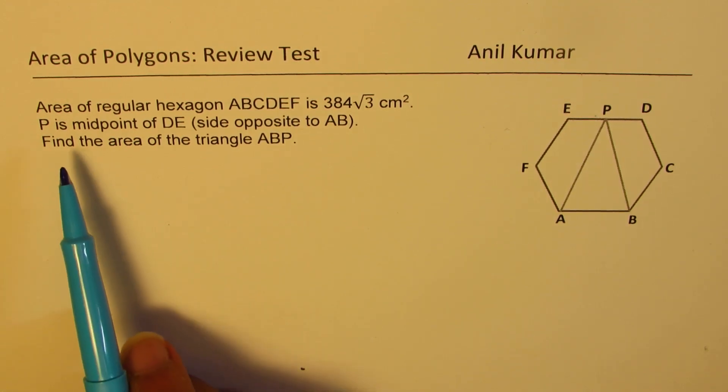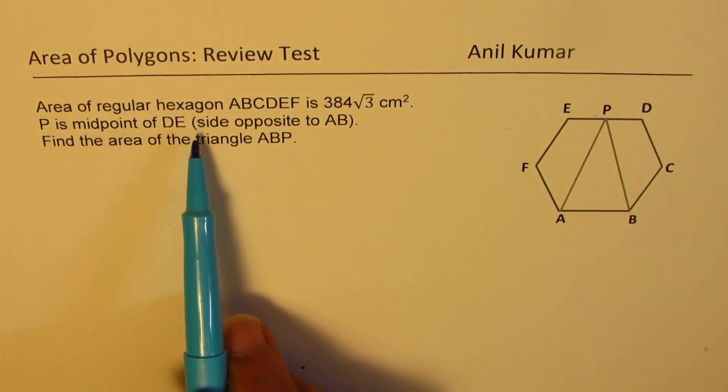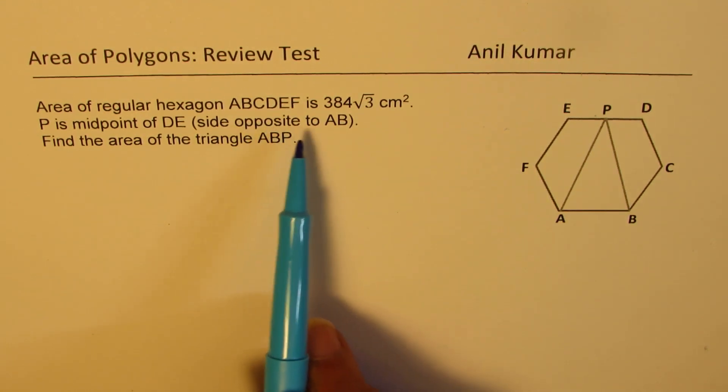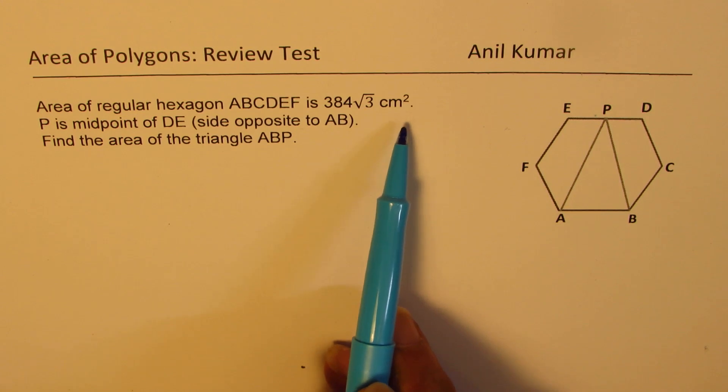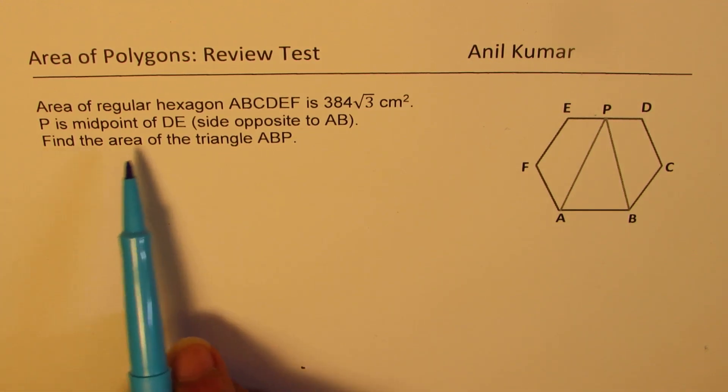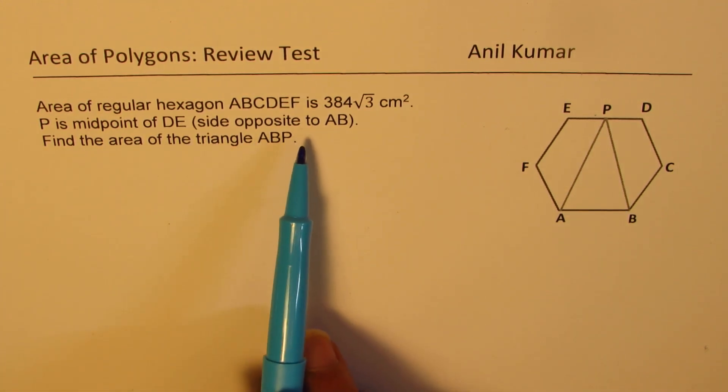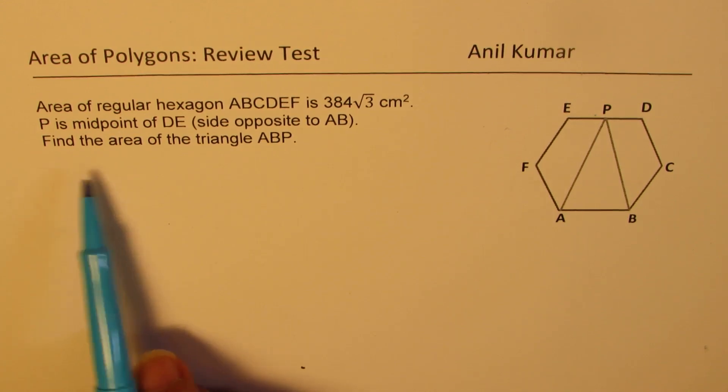The question here is: area of regular hexagon ABCDEF is 384√3 cm². P is midpoint of DE, side opposite to AB. Find the area of triangle ABP.